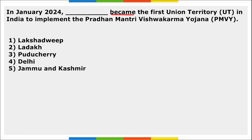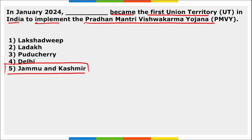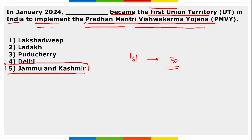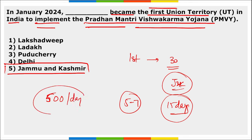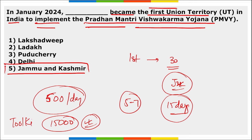Jammu and Kashmir became the first Union Territory in India to implement the Pradhan Mantri Vishwakarma Yojana. The training program for the first batch has 30 trainees — the Vishwakarmas. Basic training is for five to seven days and advanced training for 15 days. The trainees will be paid a stipend of 500 rupees per day, and a toolkit worth 15,000 rupees will also be provided to them.